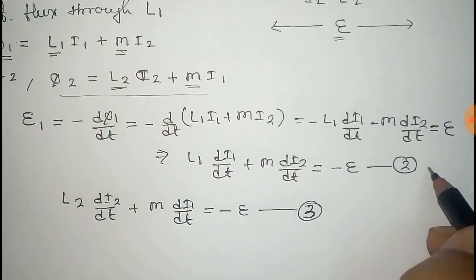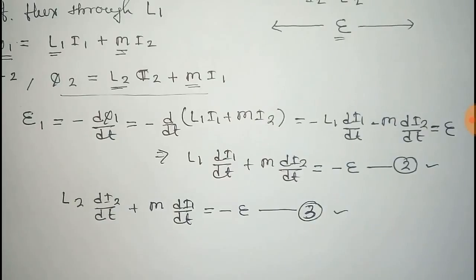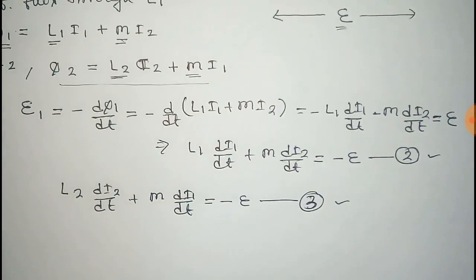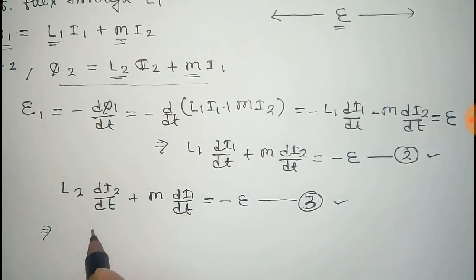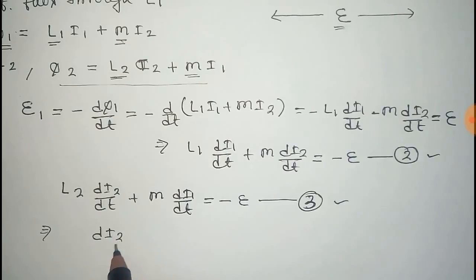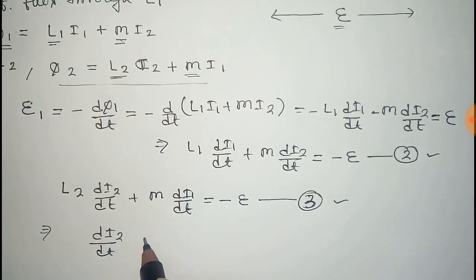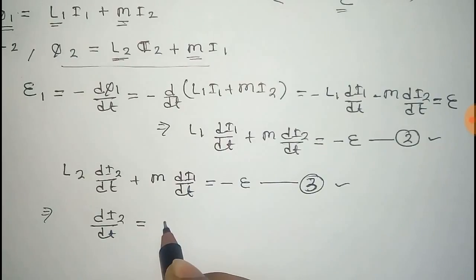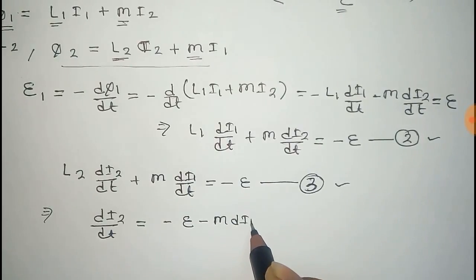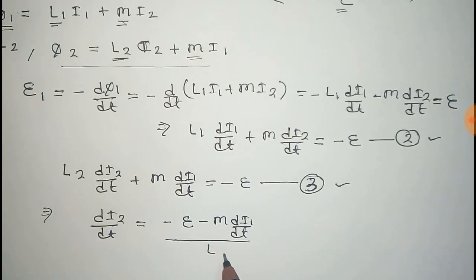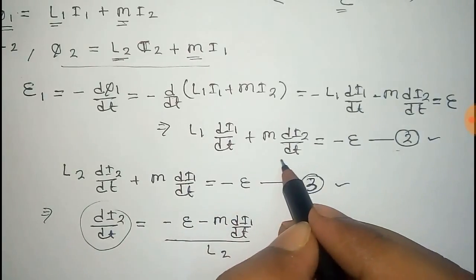Now we solve equations two and three. From equation number three, we extract the value of di2/dt: di2/dt = (minus e minus M·di1/dt) / L2. We will substitute this value of di2/dt into equation number two.